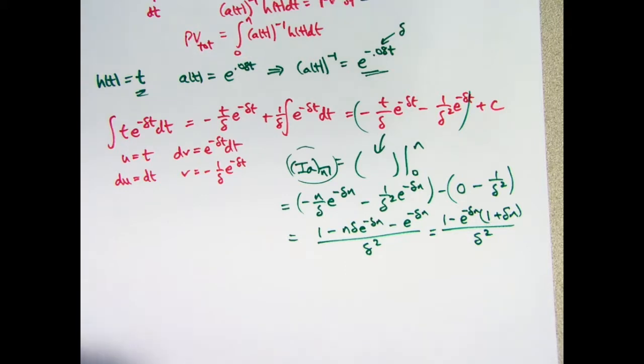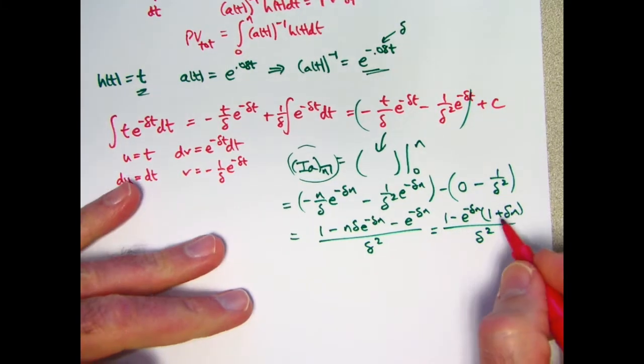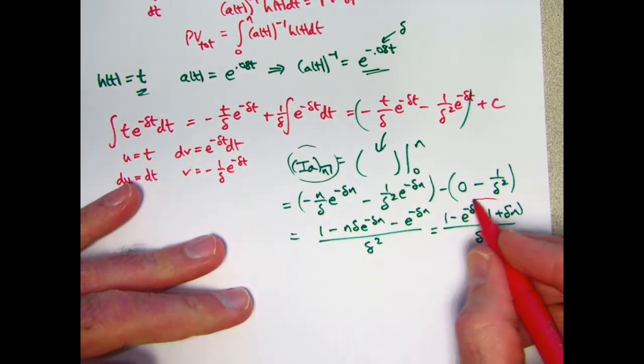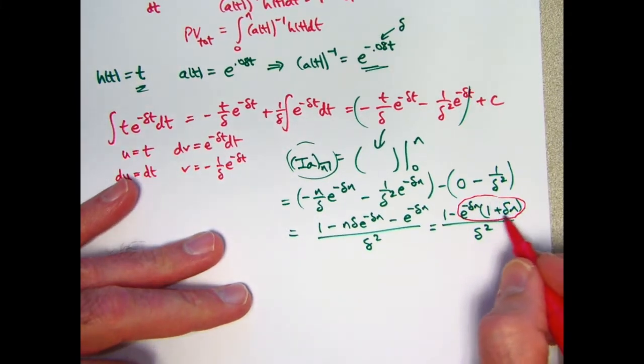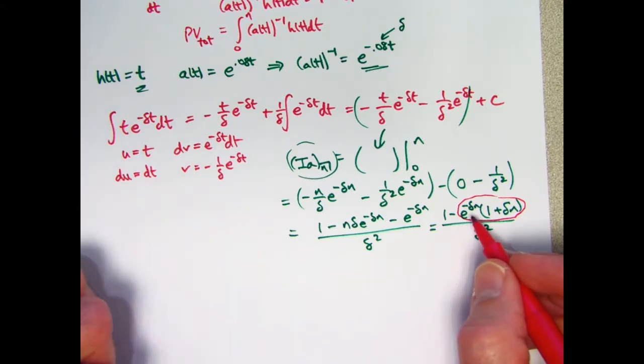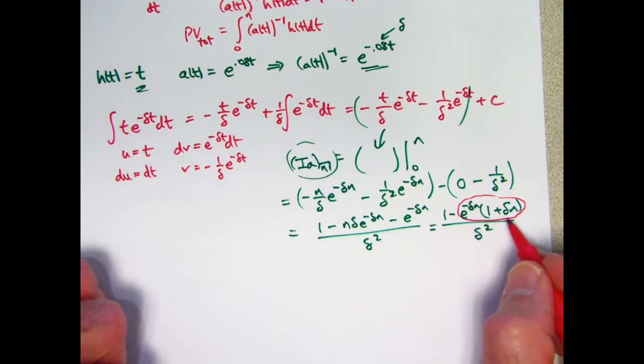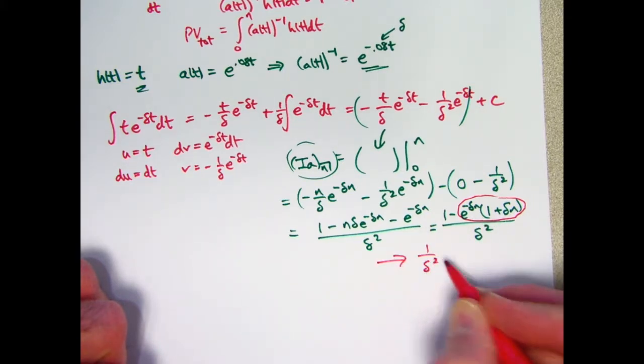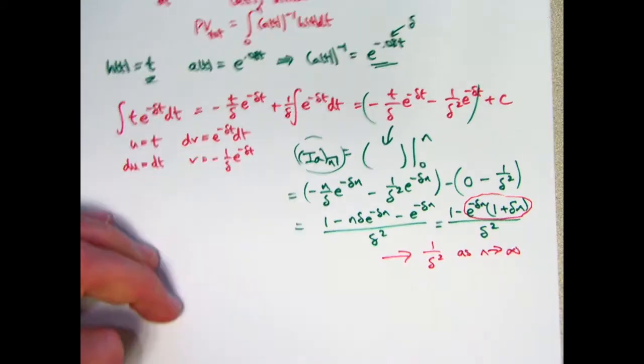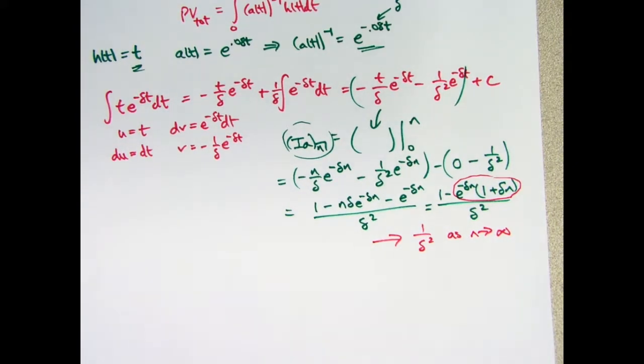Let's let n go to infinity now. As n goes to infinity, this quantity is going to go to 0. You can use L'Hopital's rule to verify that. This is growing. This is decaying to 0. It's an exponential decay, so it goes to 0 faster than this grows to infinity, so to speak. Making this product go to 0. This whole thing goes to 1 over delta squared, something pretty simple, as n goes to infinity. That does allow me to finish the problem now.